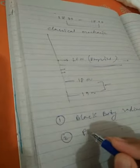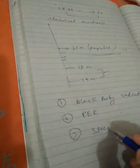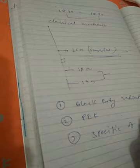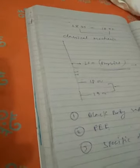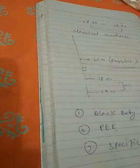Another phenomenon that couldn't be explained by scientists was the photoelectric effect. The third was the specific heat of a substance. The main phenomenon was black body radiation. All the scientists tried their best to explain black body radiation on the basis of classical mechanics, but they couldn't get success.